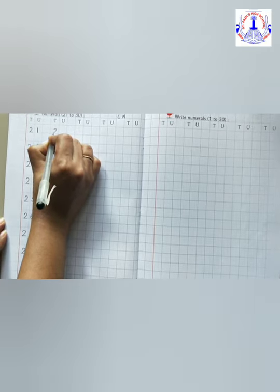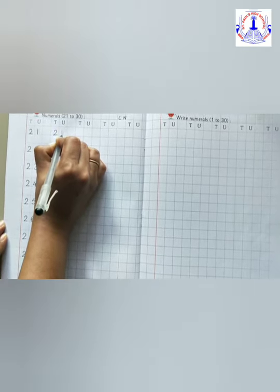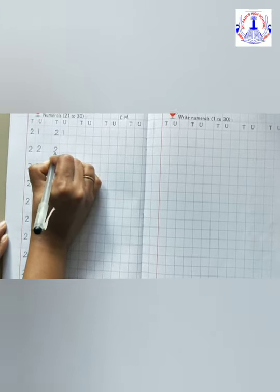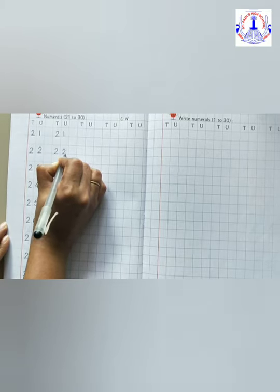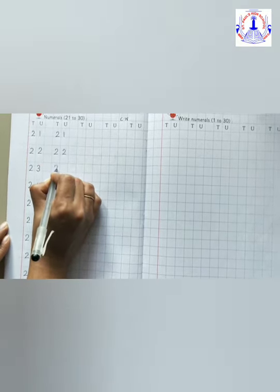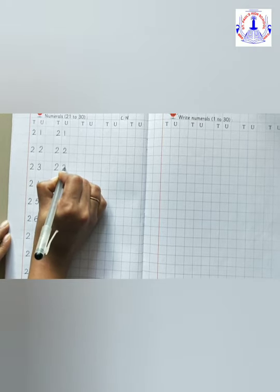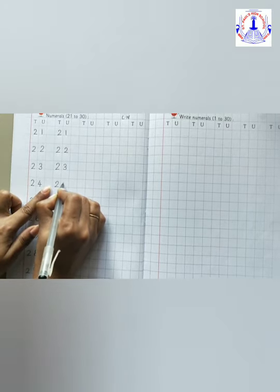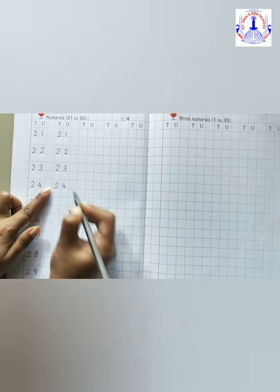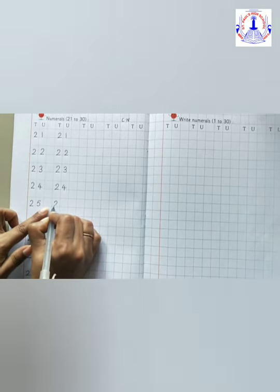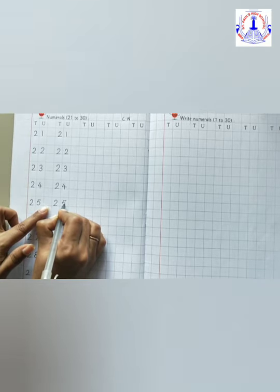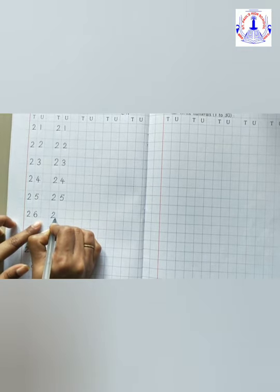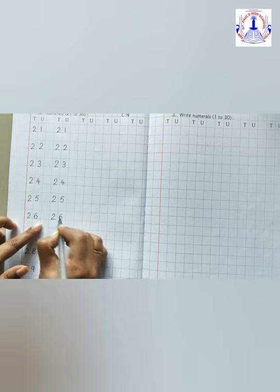The next row we will start. 21. Again, 22. After number 22, 23. 24. 25. Leave one box and write neatly children.